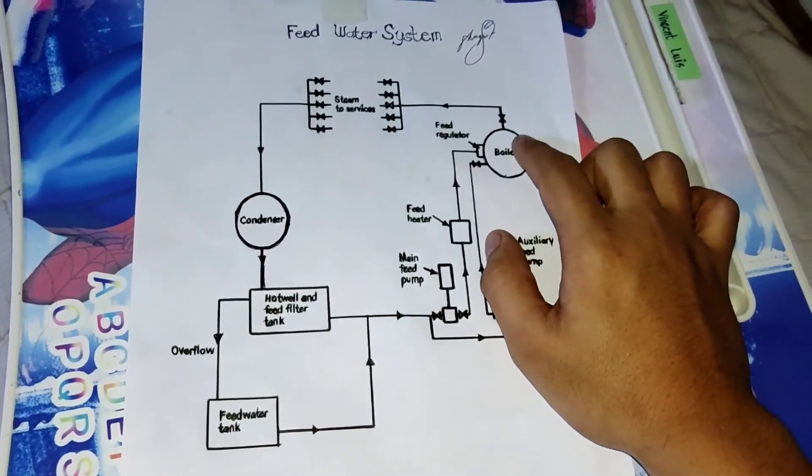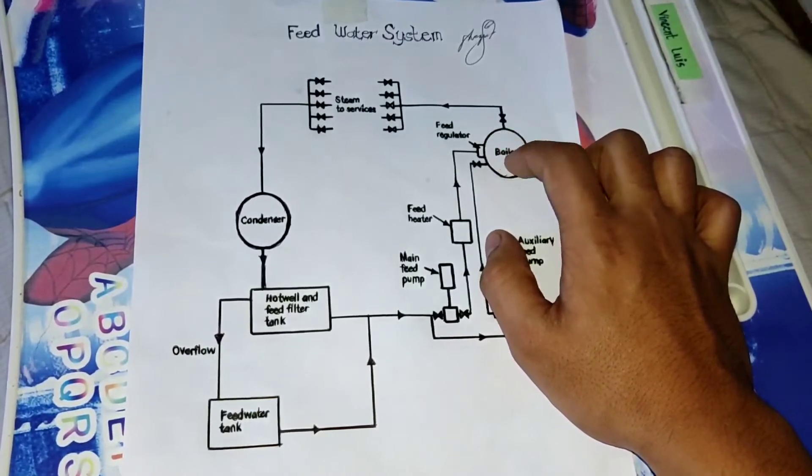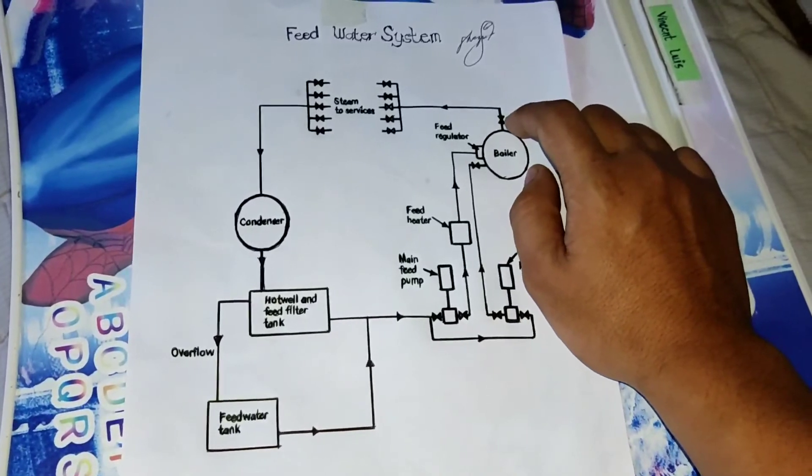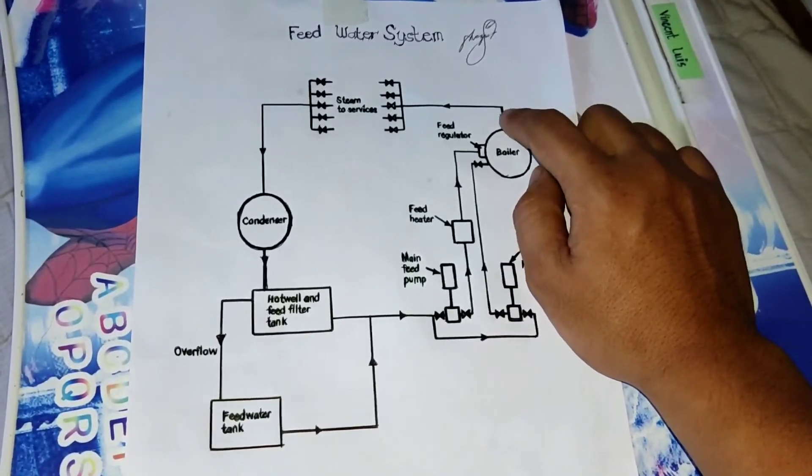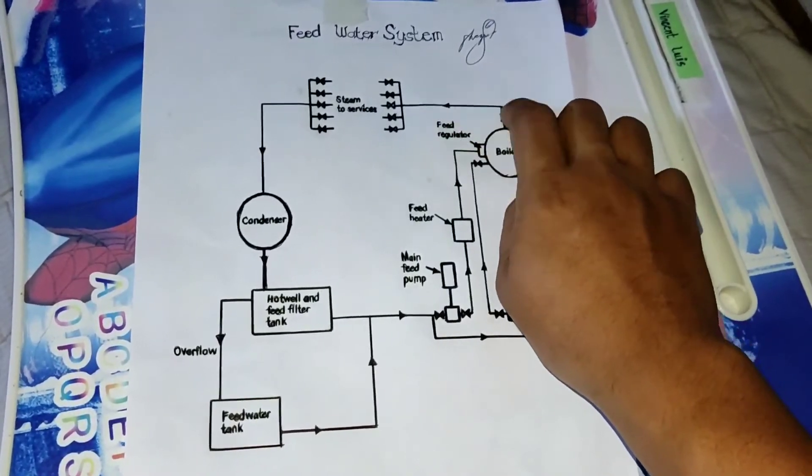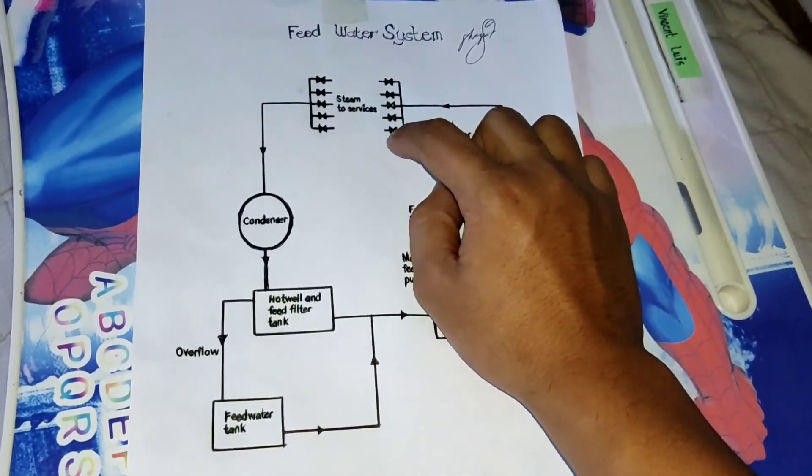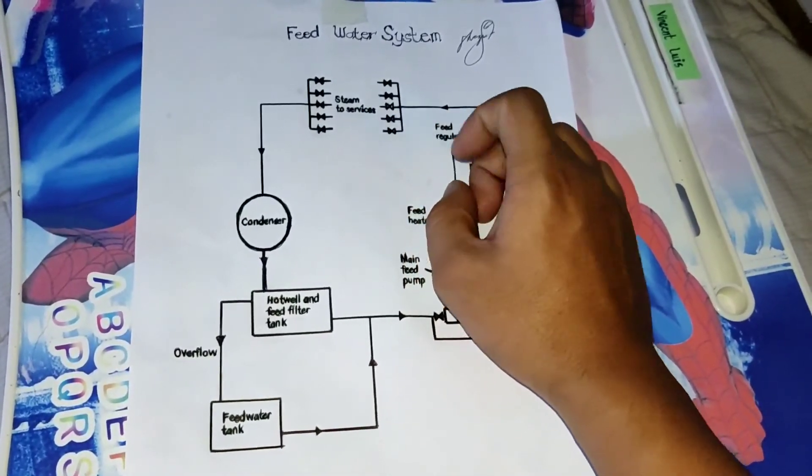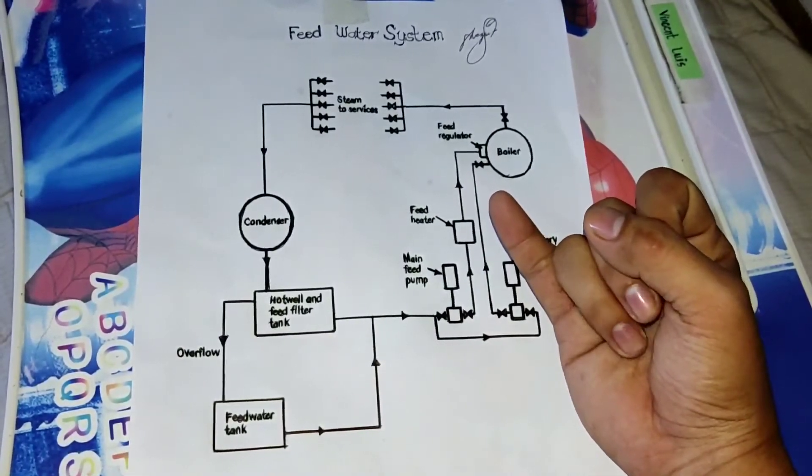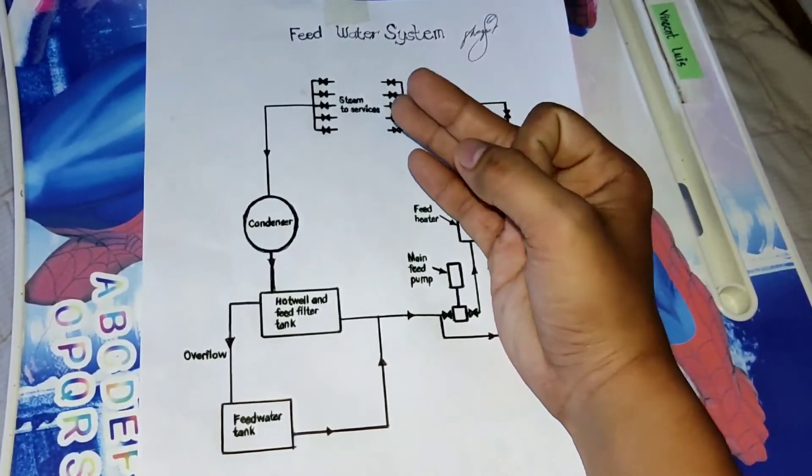And here in the boiler, after heating the feed water, it generates steam. So we have here the main steam valve and this is the main steam pipeline which is connected to the steam services or the steam consumers. We have fuel oil heating, diesel engine heating, steam turbine, etc.